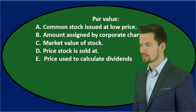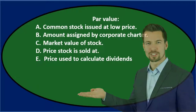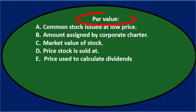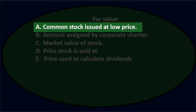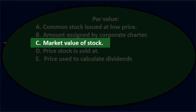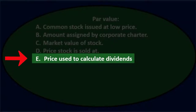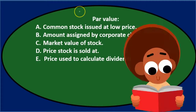In this presentation we will take a look at multiple choice questions related to corporations. First question: par value. A) common stock issued at low price, B) amount assigned by corporate charter, C) market value of stock, D) price stock is sold at, or E) price used to calculate dividends.